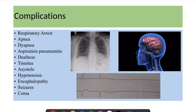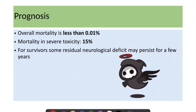Complications include respiratory arrest, apnea, aspiration pneumonitis, deafness, tinnitus, asystole, hypotension, encephalopathy, seizure, and even coma. Overall mortality is less than 0.01% with timely management; however, in cases of severe toxicity, 15% of patients may die. For survivors, some residual neurological deficit may persist for a few years.